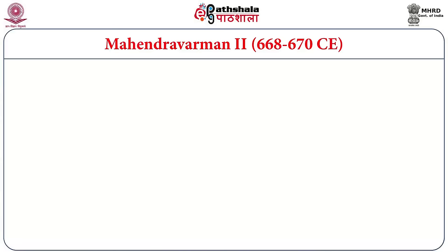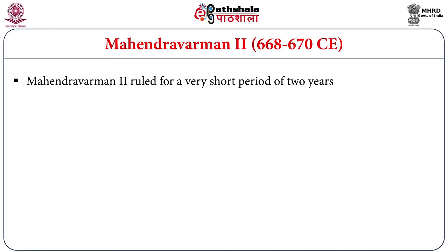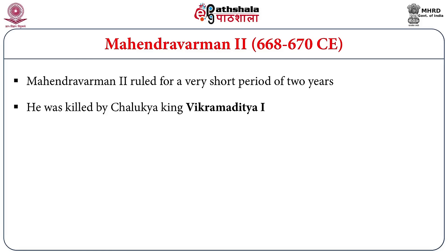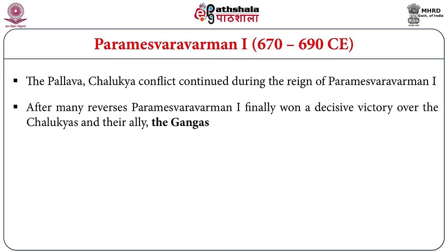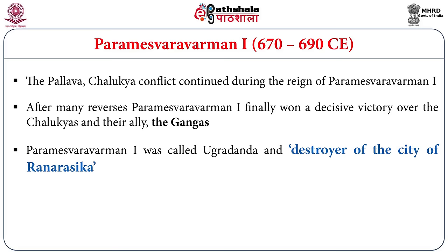Narsimha Varman was followed by Mahana Varman II, who ruled between 668 to 670 AD — only a short period of two years. He was killed by Chalukya King Vikramaditya I. Once again the Chalukyas dominated over the Pallavas, and Vikramaditya captured Kanchi and ruled it for a short period. Parameswar Varman was the next important king, who ruled between 670 to 690 AD. After many reverses, Parameswar Varman I finally won a decisive victory over the Chalukyas with the aid of the Gangas. He was called Ugradanda, meaning the destroyer of Ranarasika — the title of Vikramaditya I. He was a great devotee of Shiva and built the Shiva temple near Kanchipuram.